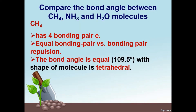When answering a question like 'compare the bond angles between CH4, NH3, and H2O,' you need 12 points altogether — 4 marks for each molecule. CH4 has 4 bonding pairs of electrons, it has equal bonding pair versus bonding pair repulsion, the bond angle is 109.5 degrees, and the shape of the molecule is tetrahedral.